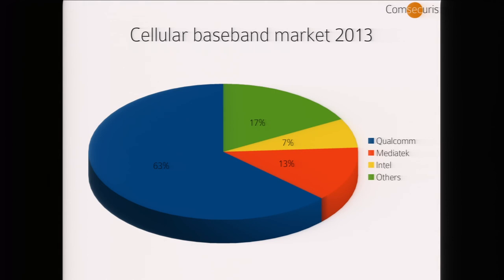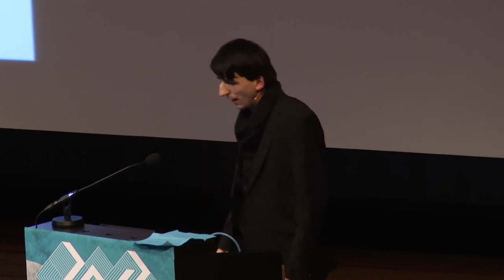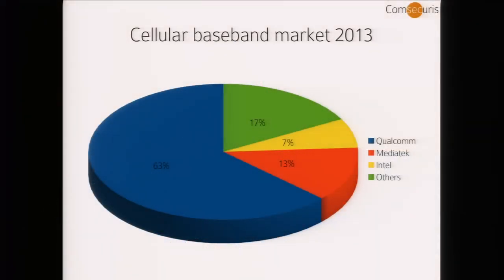Strategy Analytics publishes market share surveys for various chips. Their pie chart for baseband manufacturers in 2013 shows that in terms of shipment share, 63% of all shipped units were shipped by Qualcomm. The next biggest manufacturer is MediaTek, a Chinese manufacturer very popular in China. The third largest is Intel, with the rest split among others.